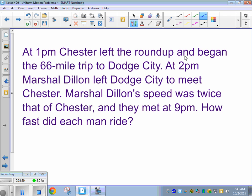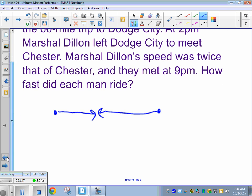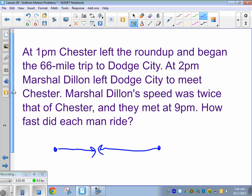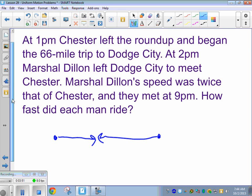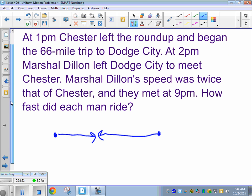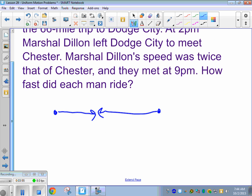Here we go. At 1 p.m., Chester left the Roundup and began the 66-mile trip to Dodge City. All right. So one guy is leaving and heading to Dodge City going this way. And then the other guy is leaving Dodge City to meet Chester. His speed was finally met at 9 p.m. How fast did each man ride? So they're running towards each other here. And so our total distance, so we've got 66 miles total. So we've got Chester and Marshall.